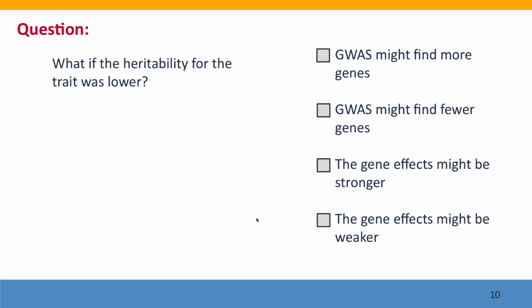Now here's a question for you. What if the heritability for the trait was lower? In our example we were using height, which is very heritable. But if we'd been working with a trait whose heritability was lower, how would that have affected the ability of our genome-wide association study to find the genes responsible for the differences in that trait?